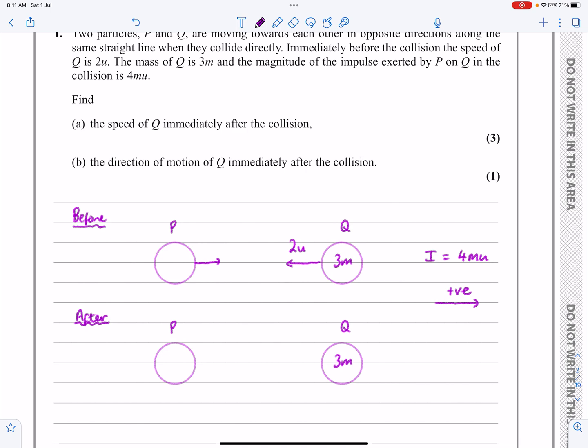So I'm going to assume, you can assume whatever you want, remember with these questions, I'm going to assume that Q is going to continue going in that direction with the speed V. If you want to call it VQ, so you can call this one VP, then that's entirely up to you.